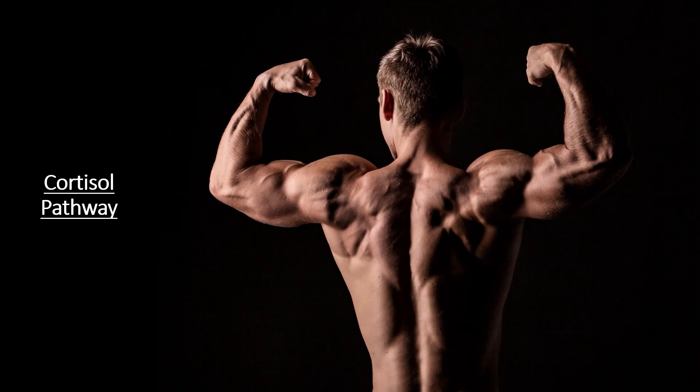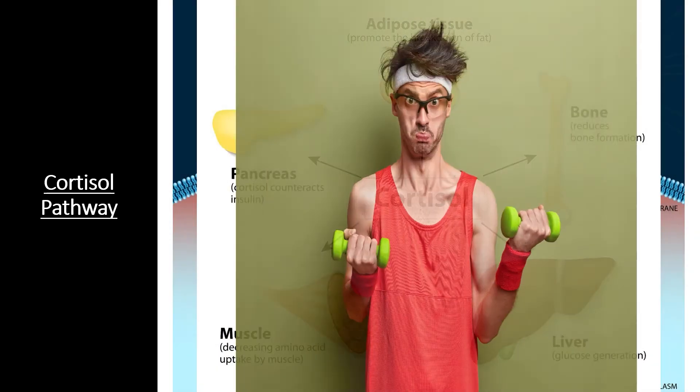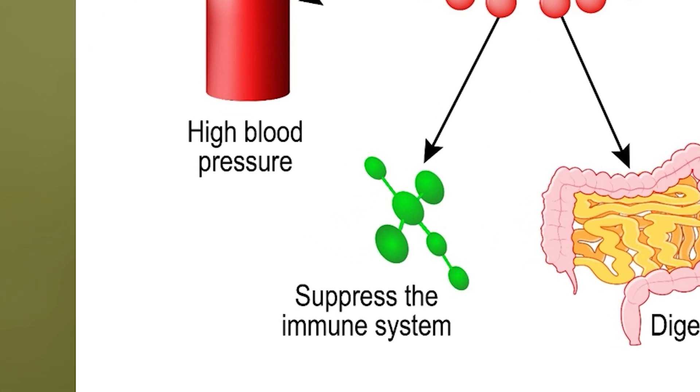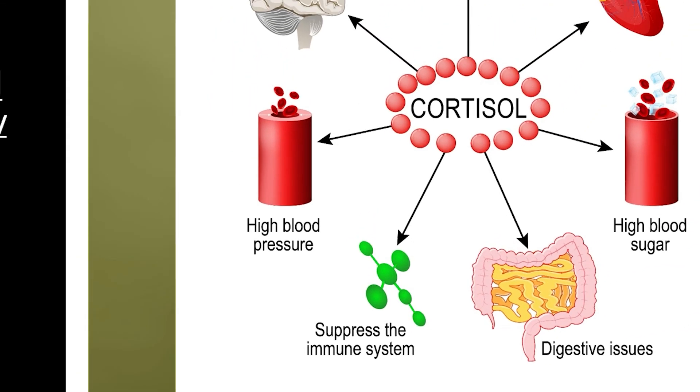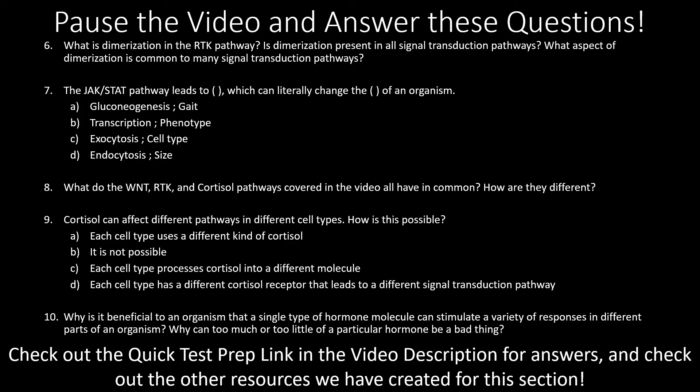If cortisol levels remain high for a long period of time, it may cause cells to undergo programmed death known as apoptosis, providing energy from protein breakdown but also leading to a weakened state. Cortisol can also weaken the immune system to reduce inflammation during stress — but this means you can get sick more easily with chronically high cortisol levels. Like many hormones, cortisol is beneficial in the right amount and devastating in excess.